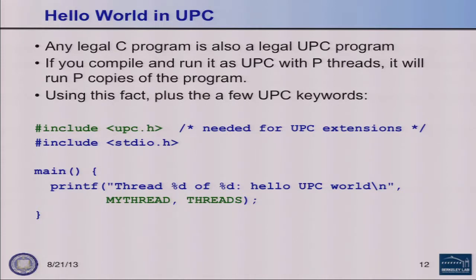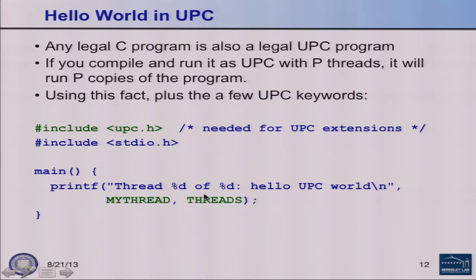In the Hello World example, the only differences from regular C are the include statement for UPC standard definitions and two variables: MYTHREAD, which gives your thread ID, and THREADS, which gives the total number of threads. Any legal C program is a legal UPC program — it may not behave as intended, but it will compile. This is very convenient since you can reuse a lot of existing C code in a parallel context.